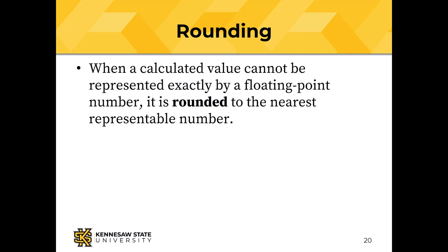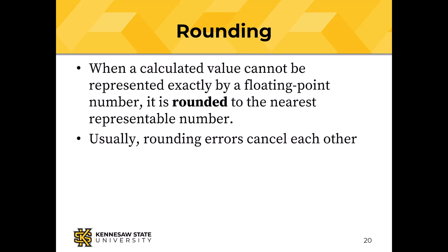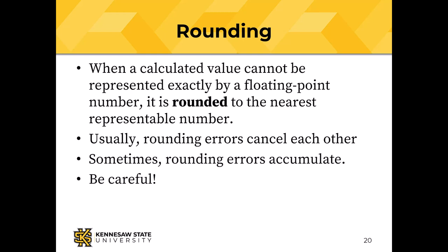When a calculated value can't be represented exactly in a floating point number, it is rounded to the nearest representable number. You might wonder how rounding is accomplished if we're using only 32 or 64 bits. The hardware computes using a larger number of bits — for example, 80 bits for 32 or 64-bit operations — and then rounds to 32 or 64 bits for storage. Usually, rounding errors cancel each other out. However, sometimes rounding errors can accumulate, so it's necessary to be careful. If you are working with complex floating point arithmetic, you should probably look at floating-point-gui.de, the floating point guide.